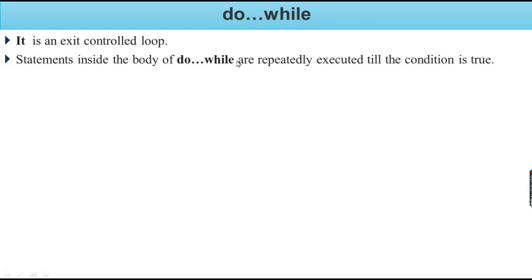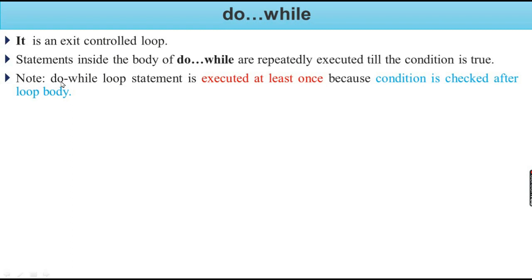The statements inside the body of the do-while loop are repeatedly executed till a condition is true. Note: a do-while loop statement is executed at least once, because the condition is checked after the loop body.